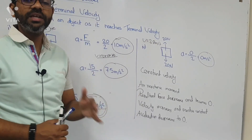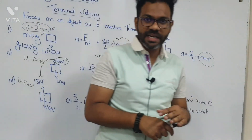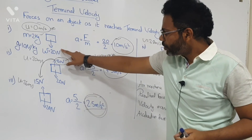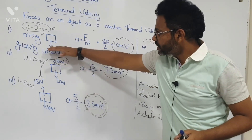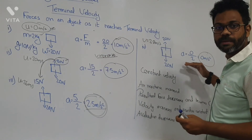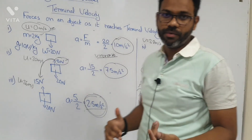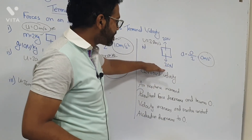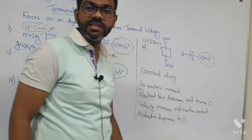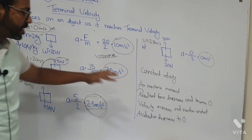So these are the changes that occur in the force on an object when it falls through air or when it is facing frictional forces. Even though the weight of the object remained constant — the downward force remained constant — the acceleration kept on decreasing and eventually became zero. The weight remains the same but the acceleration reaches zero.